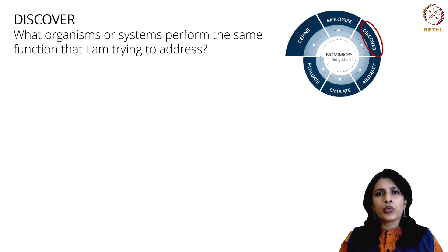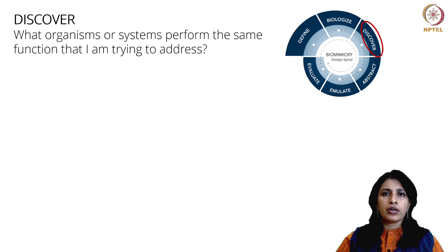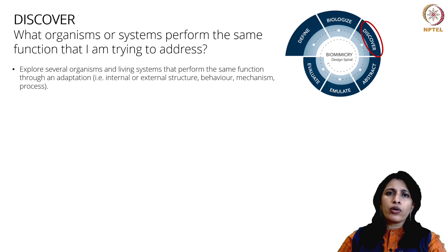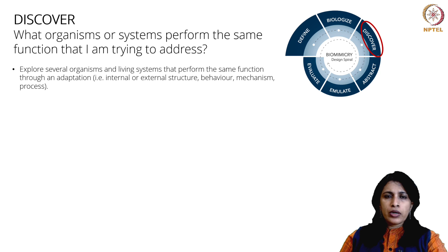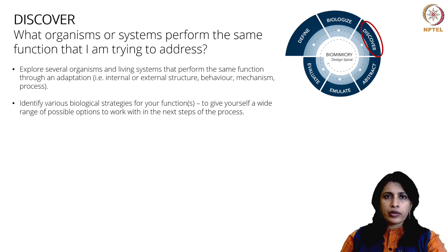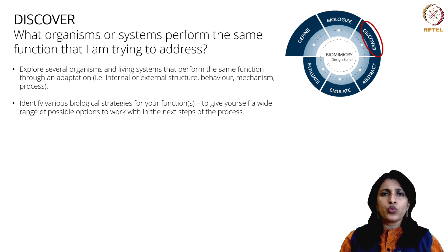A couple of tips to help you do this Discover step. One is to explore multiple organisms and living systems that are doing the same function. This gives you multiple biological strategies for those functions that you can look at for your solution in the next step — something you would have noticed as a tip in the previous two steps, Define and Biologize.